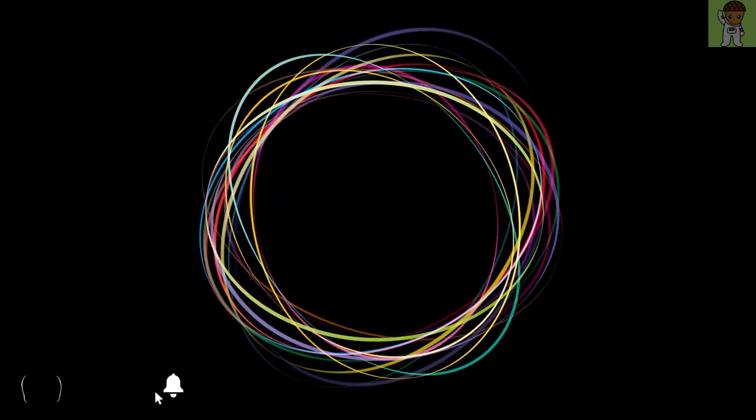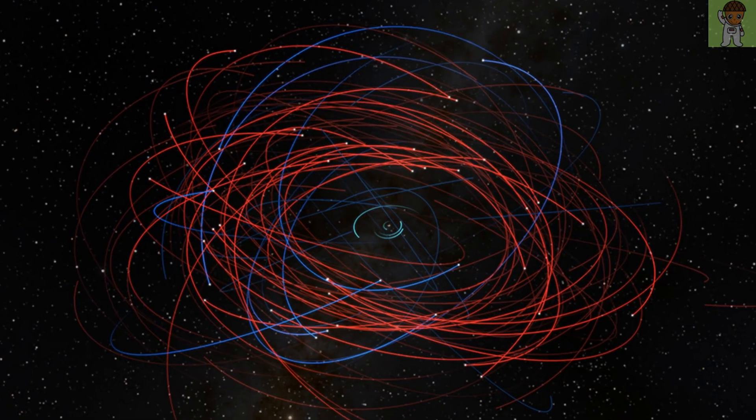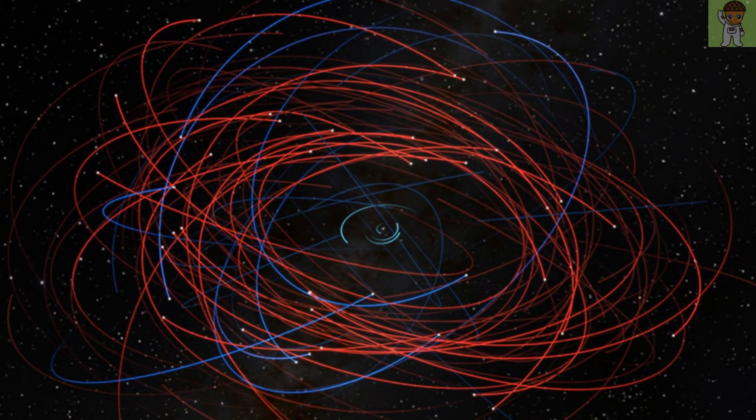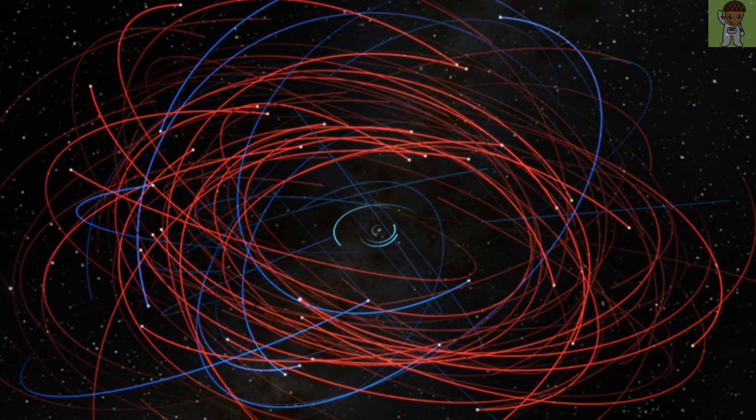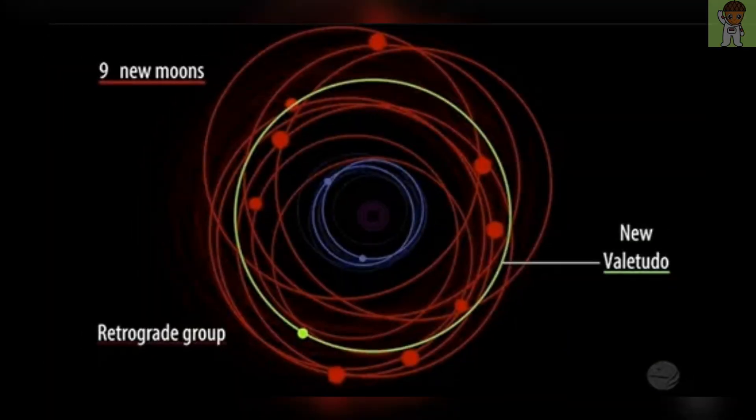But all of the newly detected satellites are irregular moons, meaning they follow distant elliptical orbits around their host planet and often move in retrograde, meaning in the opposite direction of Saturn's rotation. Some are also clumped together, suggesting they were once a single body that broke apart.